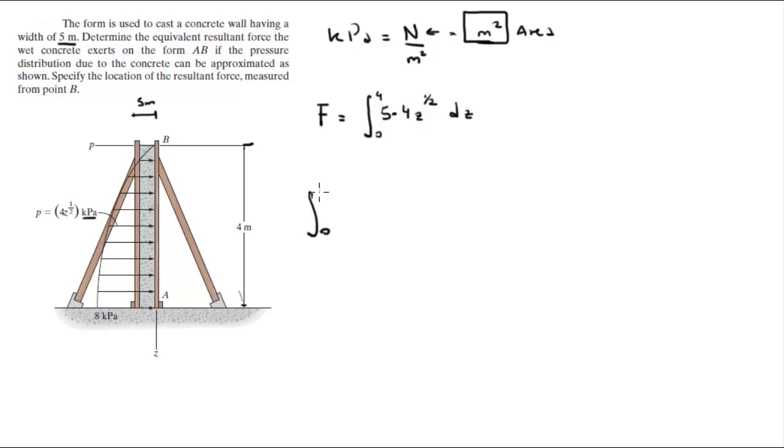The integral takes care of the length of the wall, and the 5 takes care of the width and that is an area because it's 5 meters.